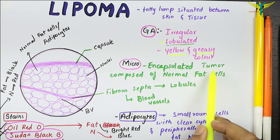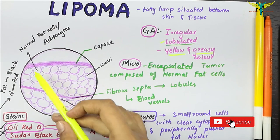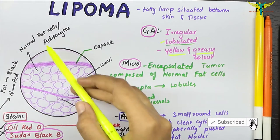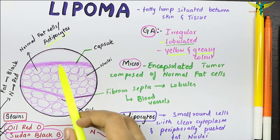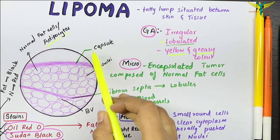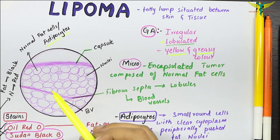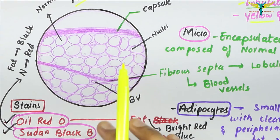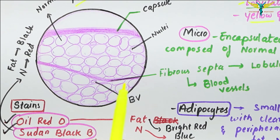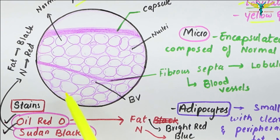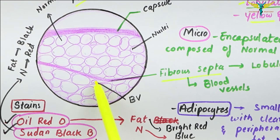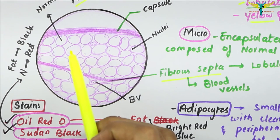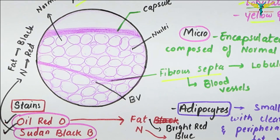In microscopy, the lipoma is an encapsulated tumor composed of normal fat cells — the adipocytes. In this diagram you can note the capsule and the adipocytes. The fibrous septa divide the tumor into lobules and irregular structures, as shown here, and they contain blood vessels.